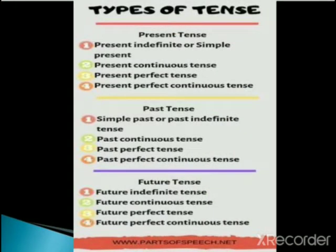The subtypes: present indefinite, present continuous, present perfect, present perfect continuous tense. Past tense: simple past or past indefinite, past continuous, past perfect, past perfect continuous tense. Future tense: future indefinite, continuous, perfect, and perfect continuous tense.